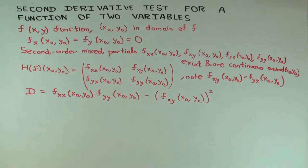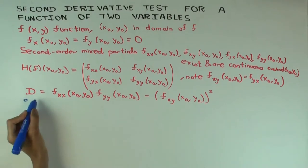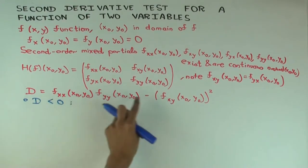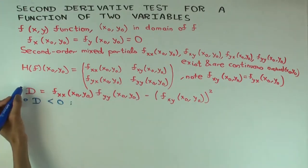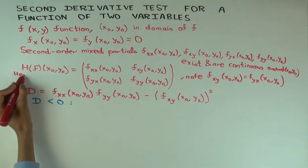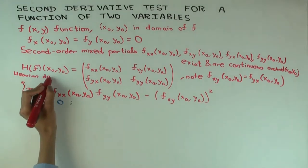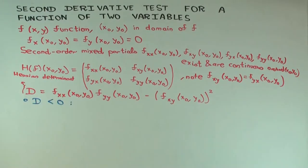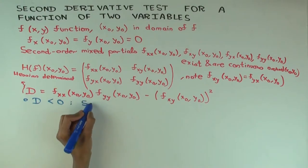We now need to give conditions for the second derivative test — the cases of the second derivative test. The first case is D less than zero, meaning the Hessian determinant is less than zero. In this case, the point is neither a local max nor a local min; it's what we call a saddle point.